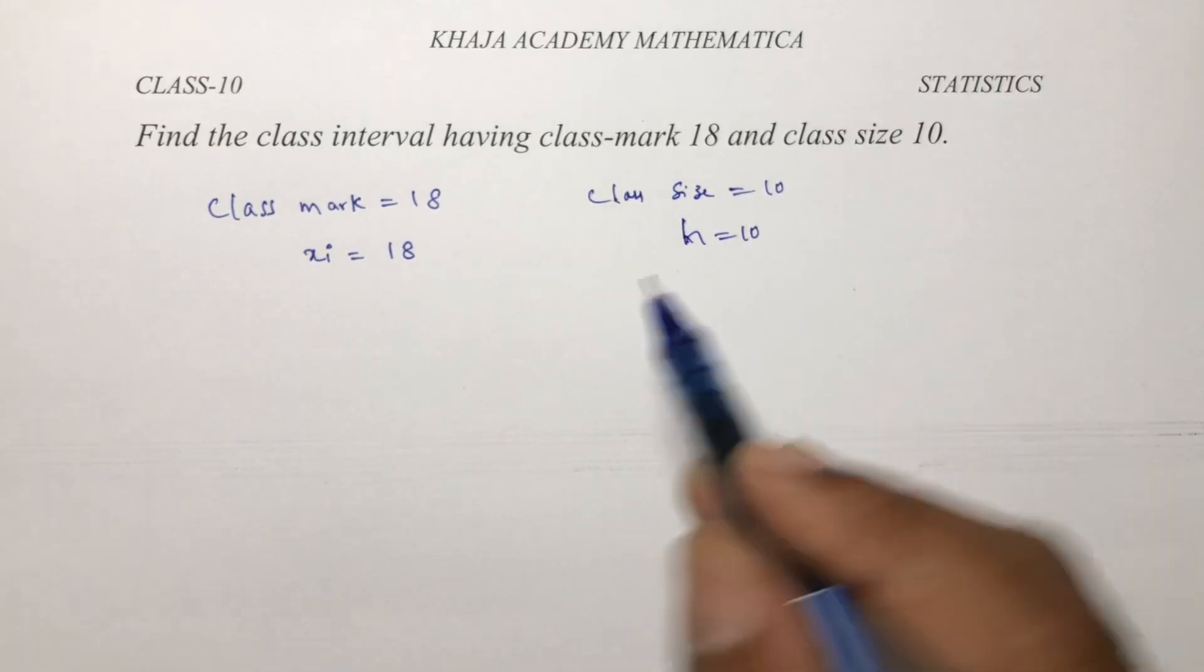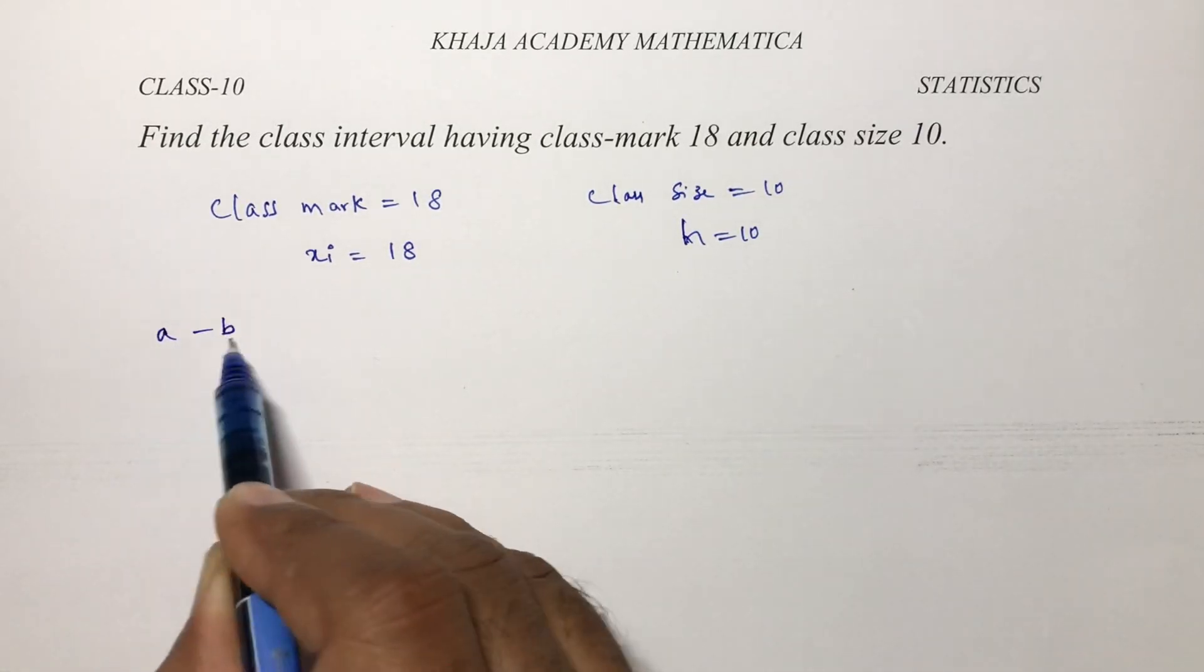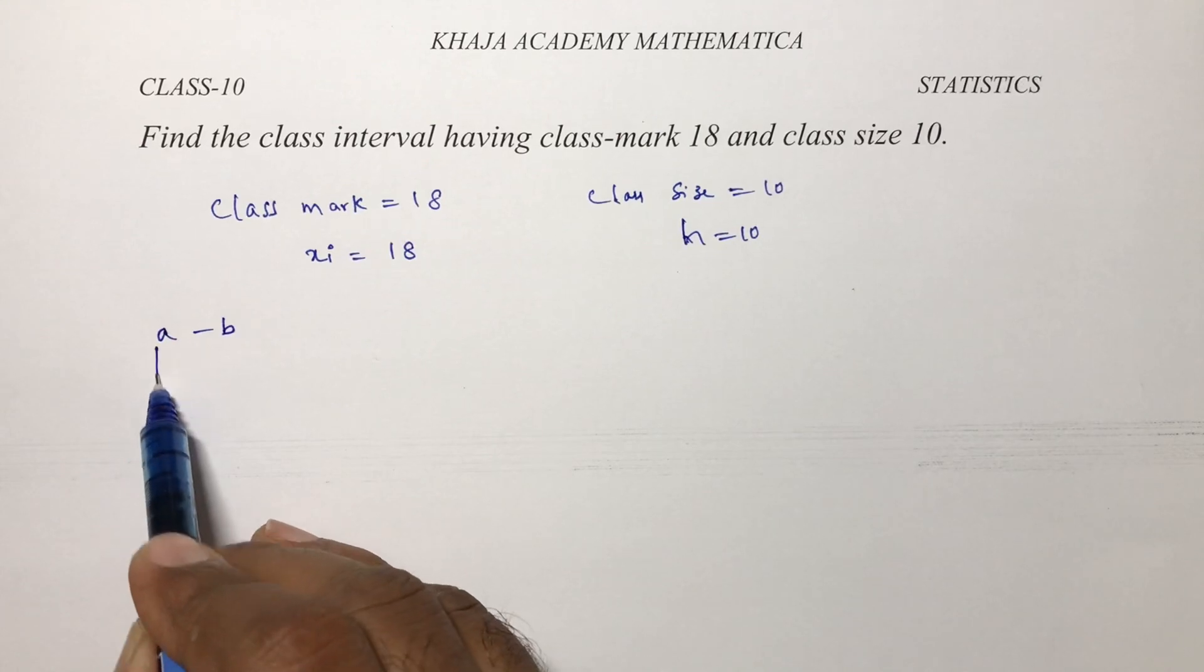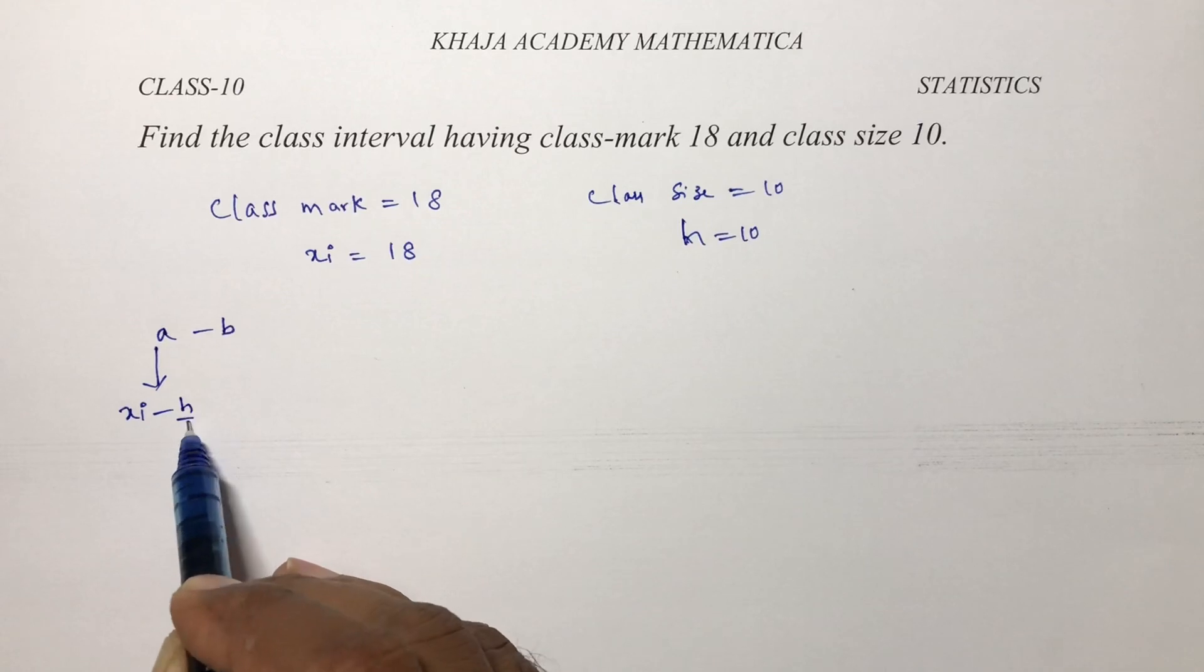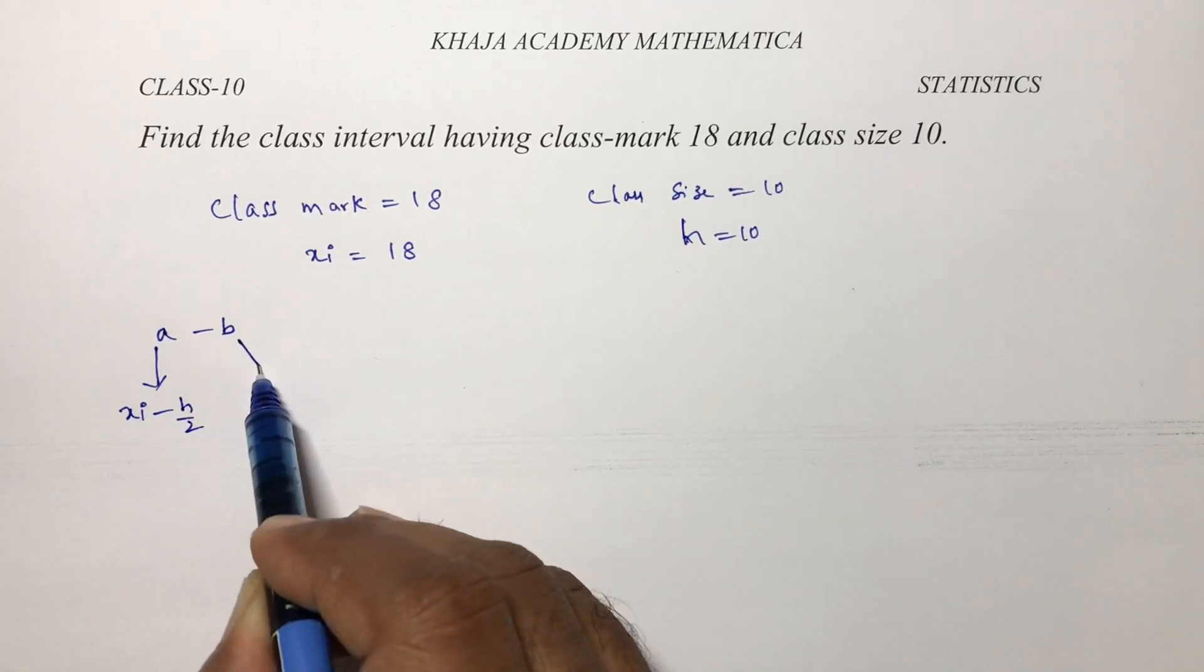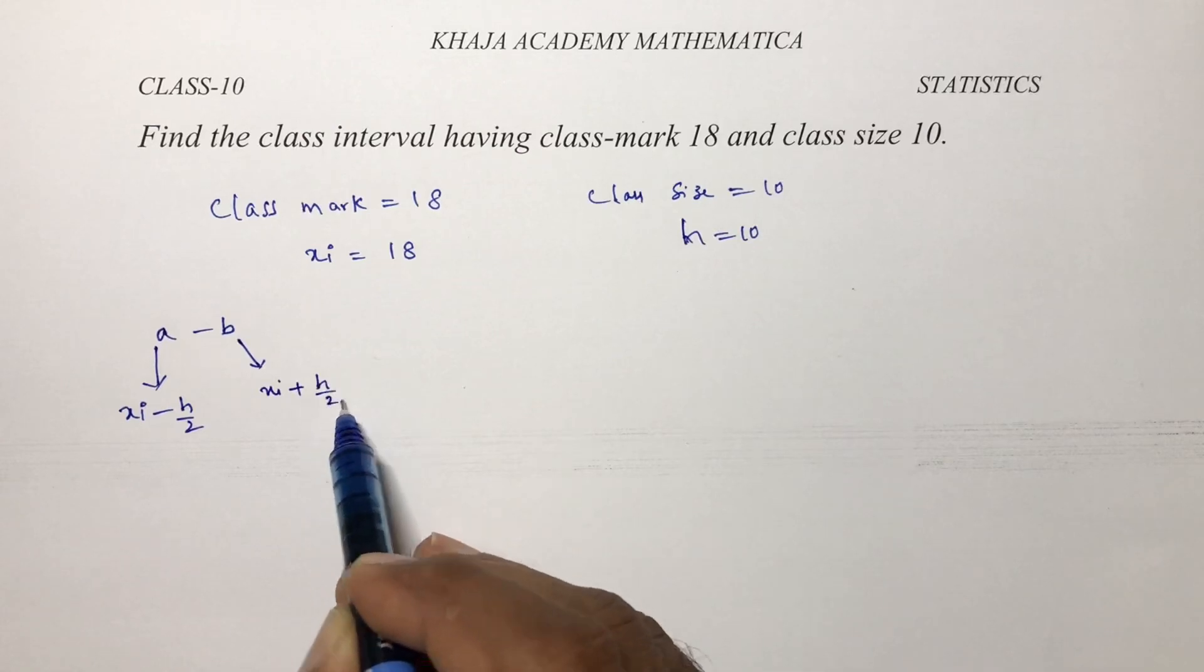Now we need to find class interval, for example a to b. To find a, the formula is xi minus h by 2, and to find b the formula is xi plus h by 2.